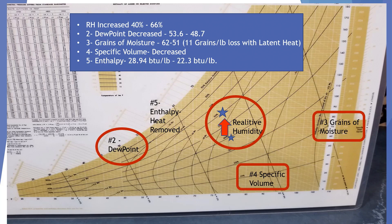And our specific volume decreased. And our enthalpy went from 28.94 BTUs per pound to 22.3 BTUs per pound. So all of this shows us what happened when we rejected heat through this coil.